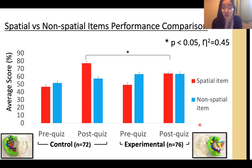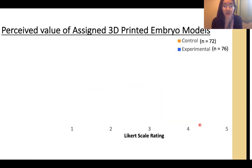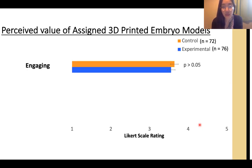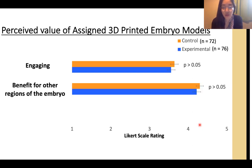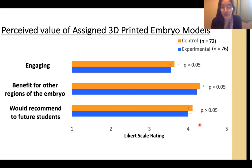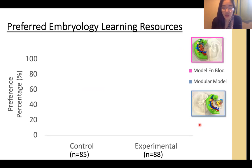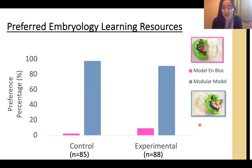Interaction with the single-piece model was more effective for spatial understanding. Before switching learning resources, both groups rated their assigned 3D printed embryo model highly — they perceived the models as engaging, said they would use the model for other regions, and would recommend them to future students, with no significant difference in responses between groups. After interacting with both resources, both groups selected the modular model as their preferred model.